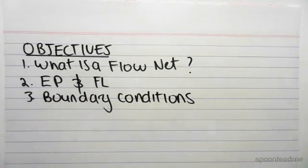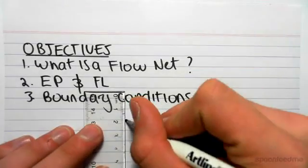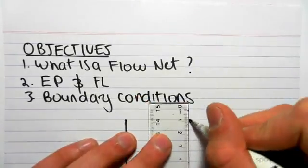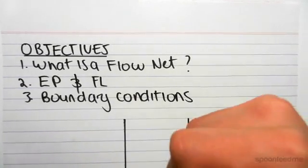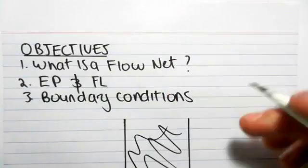The first thing we need to do is have a look at what a flow net is. A flow net models the flow of water through a soil sample. So let's say we have a tube like this, which is filled with soil.